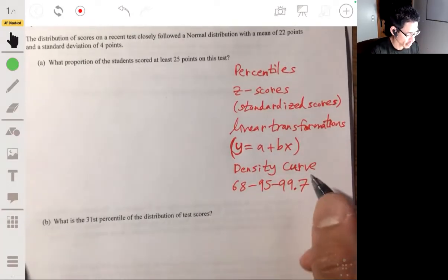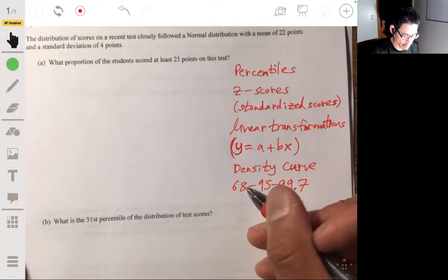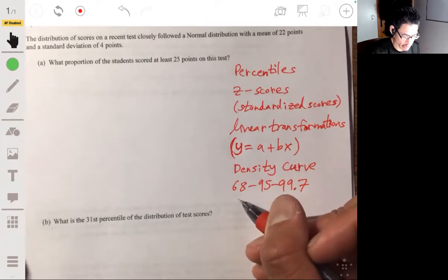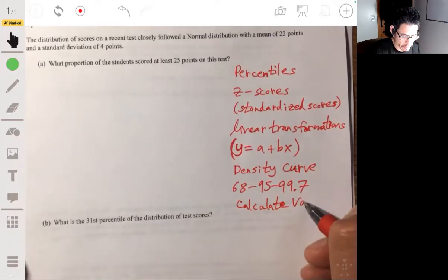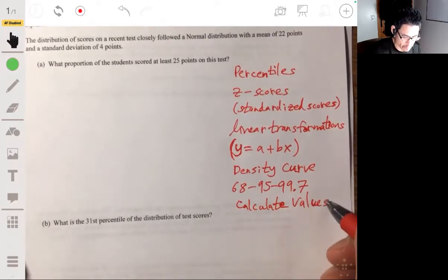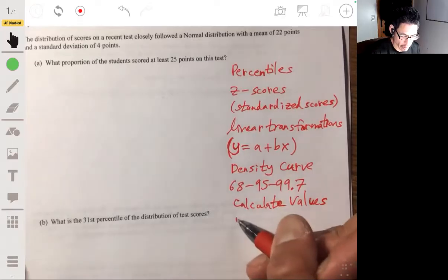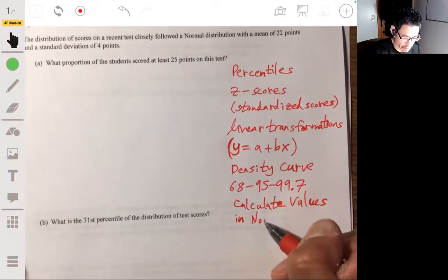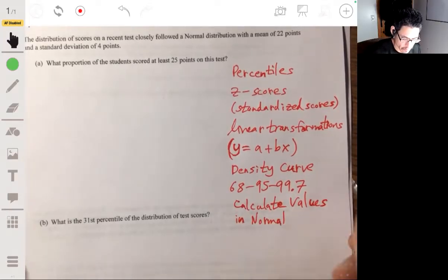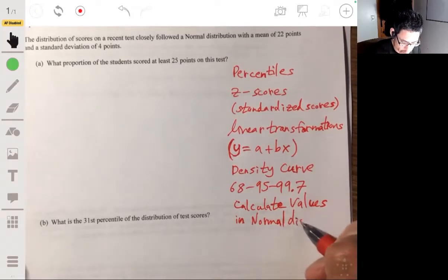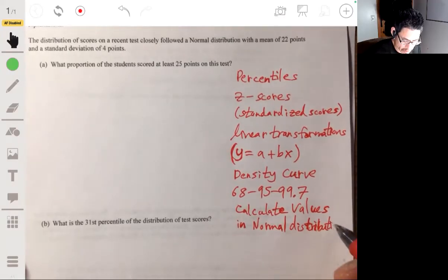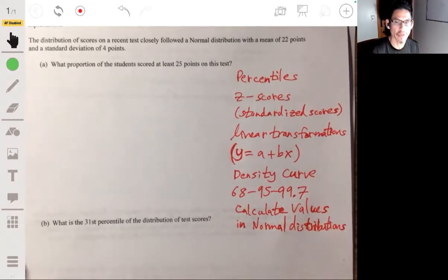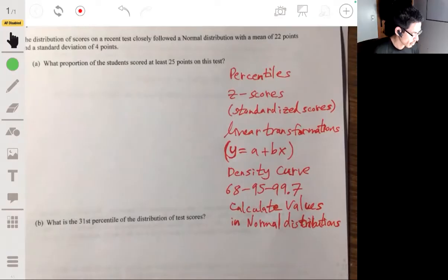Know, of course, the 68-95-99.7 rule, and then be able to calculate values in normal distributions. That's gonna be a big bulk and set the foundation for a lot of what's to come in the rest of this course.